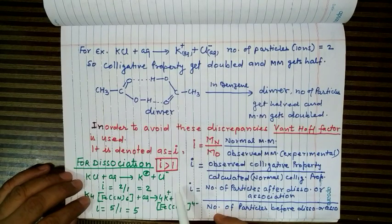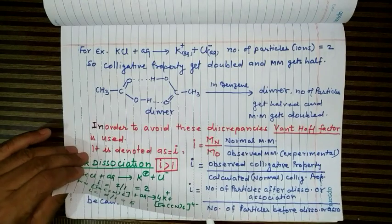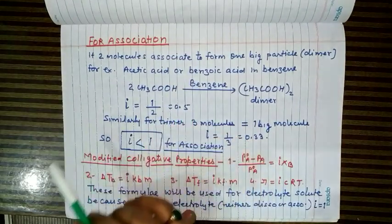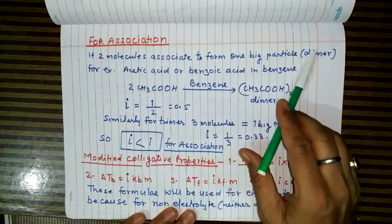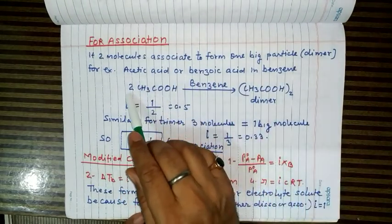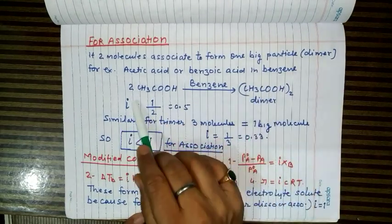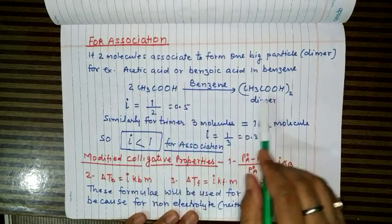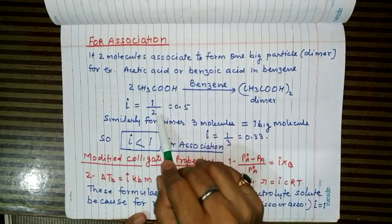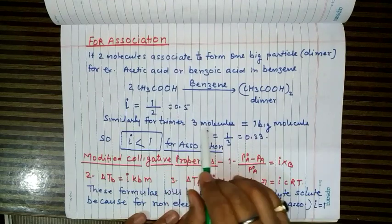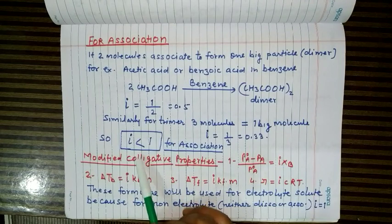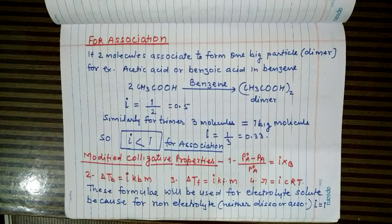For association, the value of i is less than one. A minimum of two molecules must associate — if two molecules associate to form a dimer, one big particle forms from two. The Van't Hoff factor becomes 1/2 = 0.5. If three associate to form a trimer, i = 1/3 ≈ 0.33. This is the case for acetic acid or benzoic acid in benzene, where hydrogen bonding causes dimer formation.